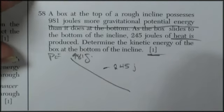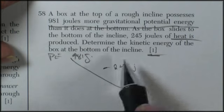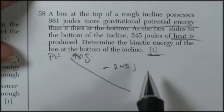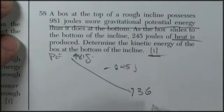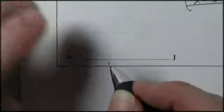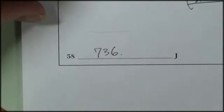Well, I subtract. I had 981 joules. I lost 245. So I'm going to be left with, let's see, that would be 6, 8, 7, 3, and 9, 2, 7 joules. The answer is 736 joules.